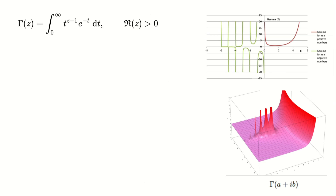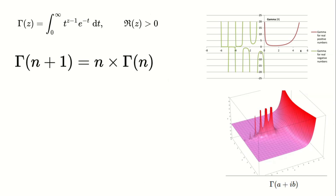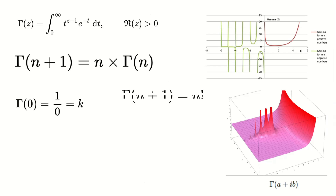However, I have a solution to define factorials even for negative integers, by extending the domain to singularity numbers. As many of you know, the gamma function satisfies the relationship: gamma of n+1 equals n times the gamma of n. From this, gamma of 0 would equal 1 divided by 0, which corresponds to the singularity unit k. The relationship between gamma and factorials tells us that gamma of n equals (n−1) factorial. Substituting 0 into this relationship shows that negative 1 factorial equals the singularity unit k. Using the same logic, the factorial of negative 2 becomes negative k, and so on.